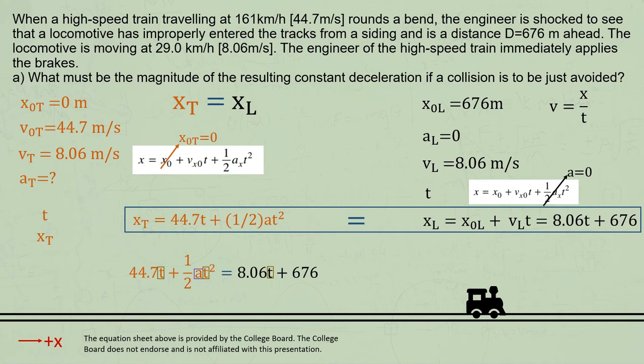But all is not lost. When we get stuck at a point like this, it's a good idea to find a known variable we haven't used, try to somehow bring it into the equation, and use it to eliminate one or more of the unknowns. And we haven't used the final velocity of the train.